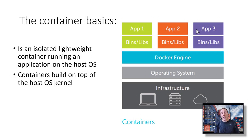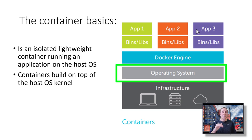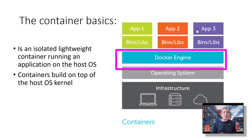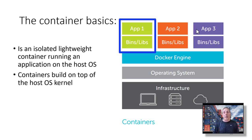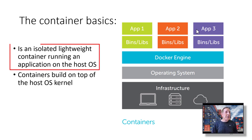Let's get into container basics. This diagram is a great way to start. You can see a laptop, server, and a cloud — that represents any kind of hardware. Could be your data center, your laptop at home, or Azure, AWS, et cetera. We don't really care about hardware. Then you have your operating system, the Docker engine, and then the green App 1 with its binaries and libraries, App 2, App 3, and so on. A container is an isolated, lightweight container running an application on a host OS.